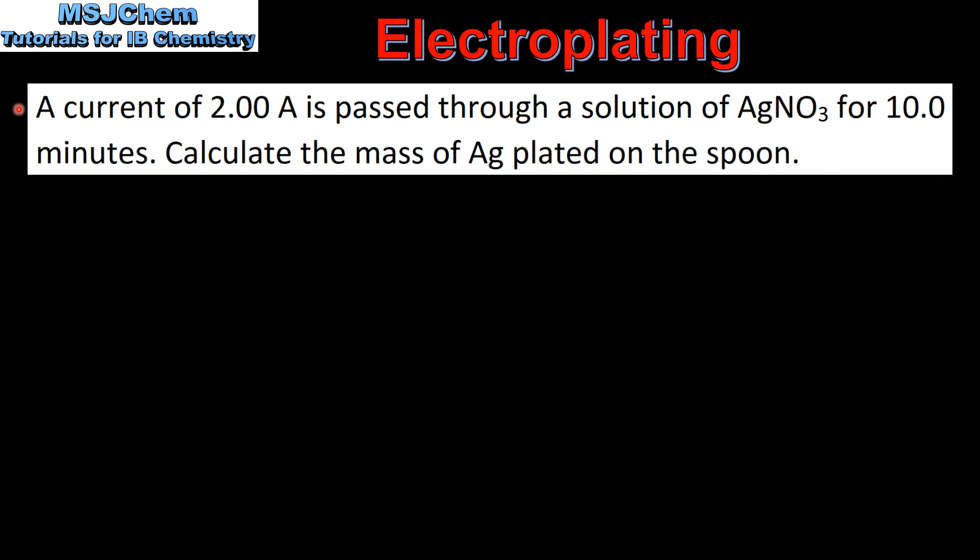Let's look at an example. A current of 2 amps is passed through a solution of silver nitrate for 10 minutes. Calculate the mass of silver plated on the spoon.